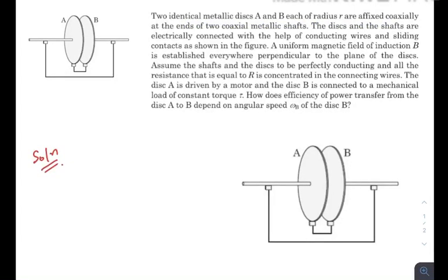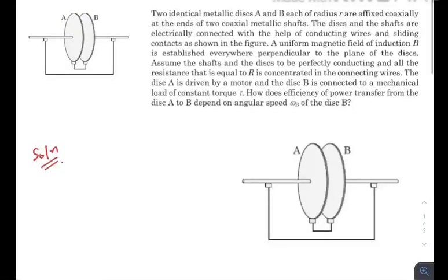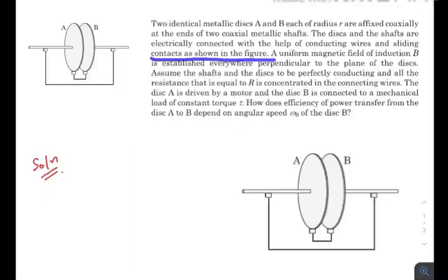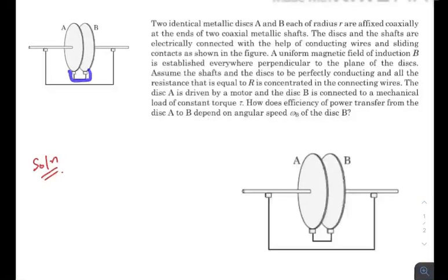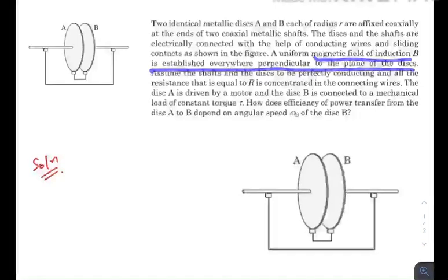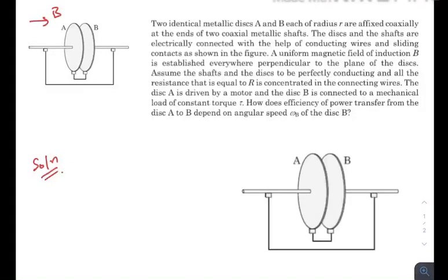There are two identical metallic disks A and B, each of radius r, as you can see in the diagram, connected coaxially. The disks and the shafts are electrically connected with the help of conducting wires and sliding contacts as shown in the figure. A uniform magnetic field of induction B is established everywhere perpendicular to the plane of the disk.